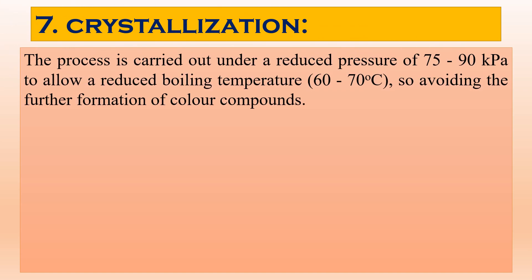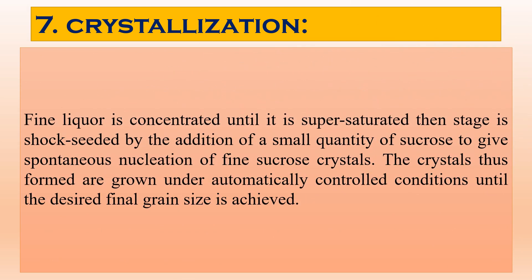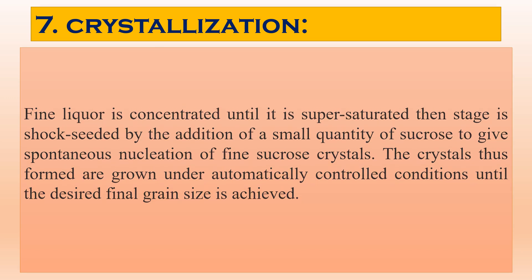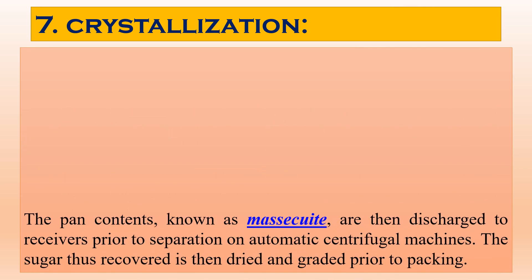After evaporation, crystallization is done under reduced pressure of 75 to 90 kilo Pascal and at 60 to 70 degree Celsius temperature. Many times crystallization is initiated by adding a small quantity of sucrose. The crystals thus formed are grown under automatically controlled conditions until the desired final grain size is achieved, and the sugar crystals are separated by the process of centrifugation.